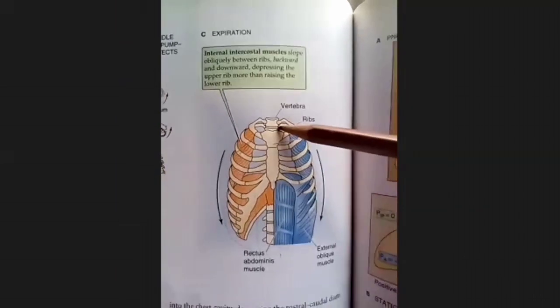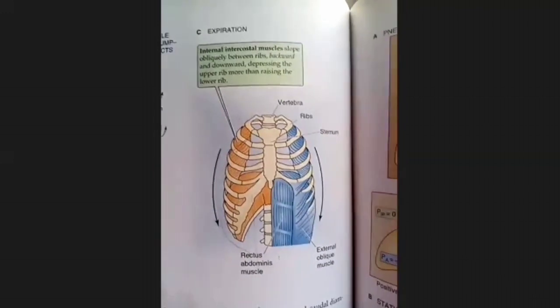These are the muscles of expiration. But remember what I told you before — expiration is only a passive process under normal circumstances. When we normally breathe in, we are using muscles. But when we normally breathe out, we simply release the contraction of those muscles and expiration happens through natural recoil. It is only when we are running or doing exercise that the muscles of expiration come into play.